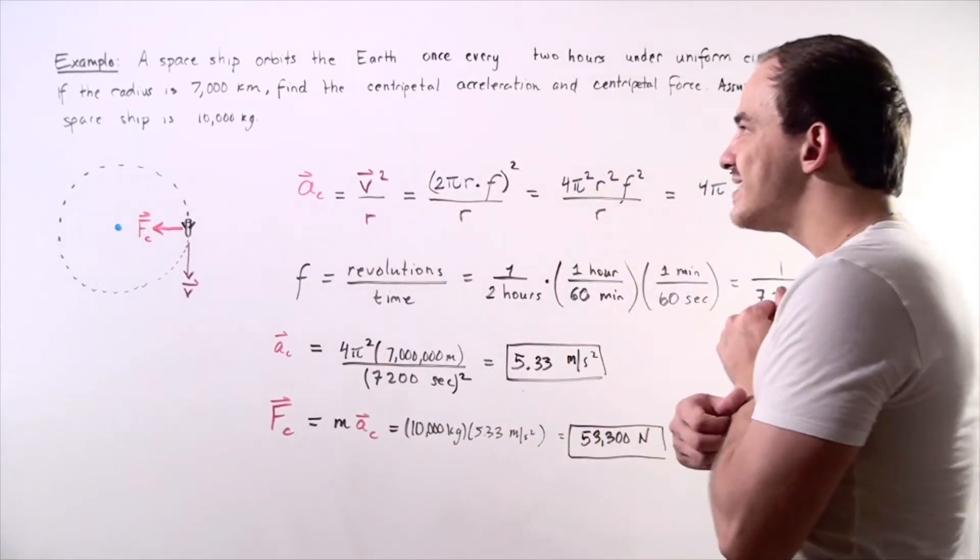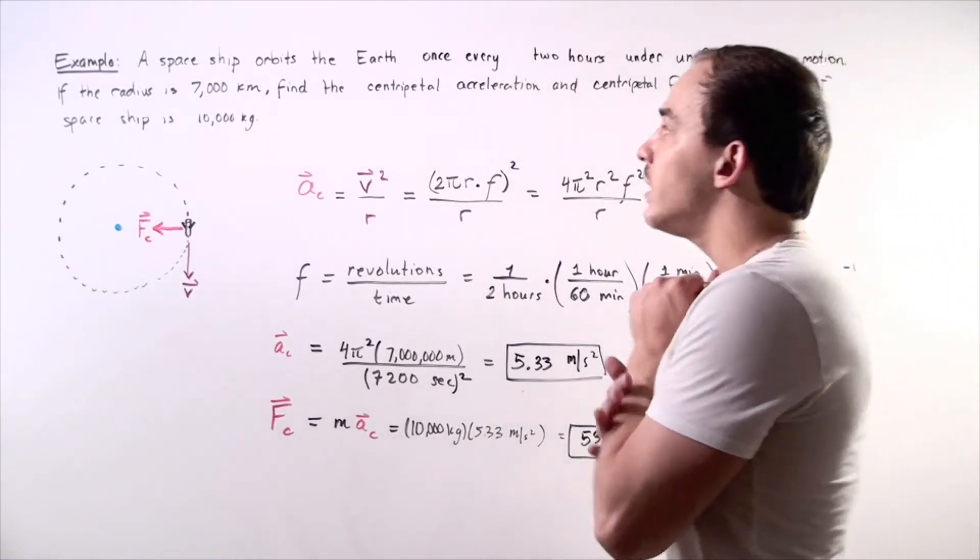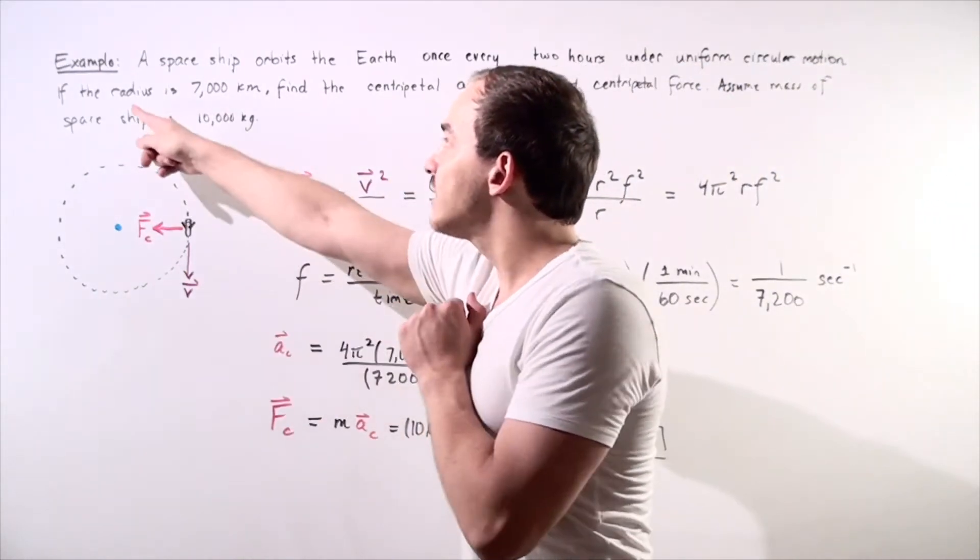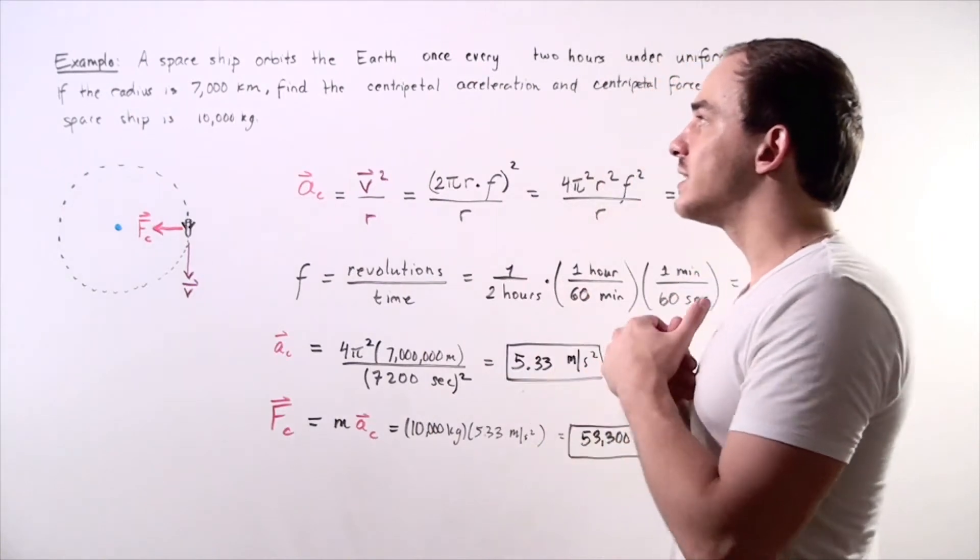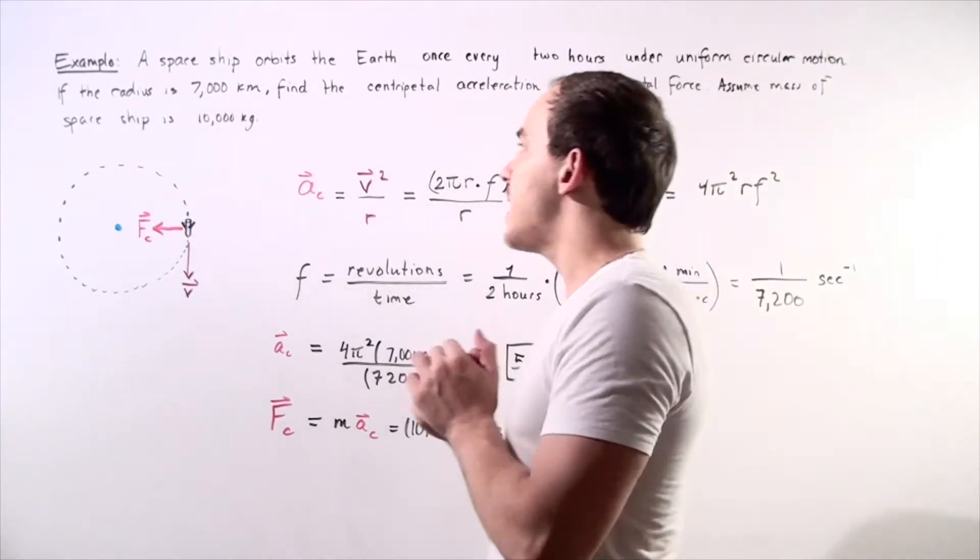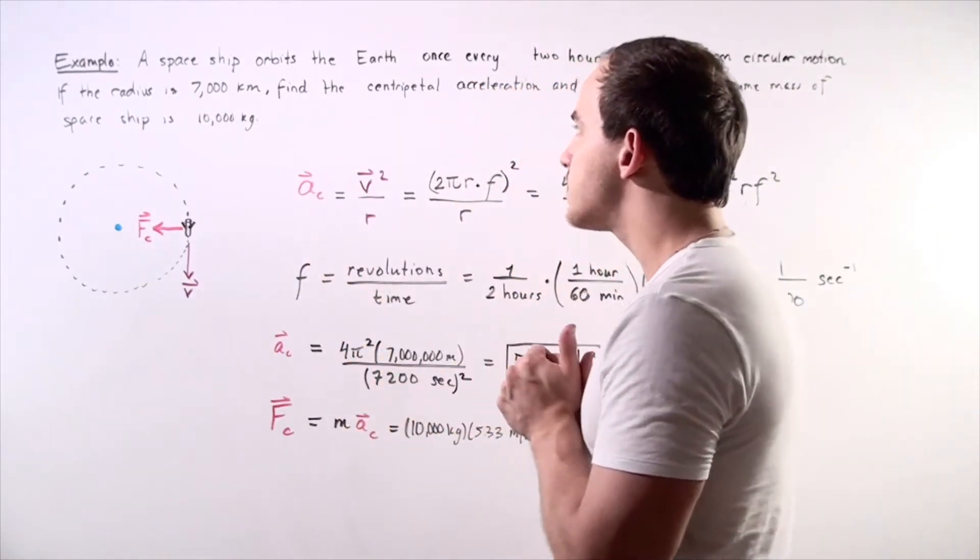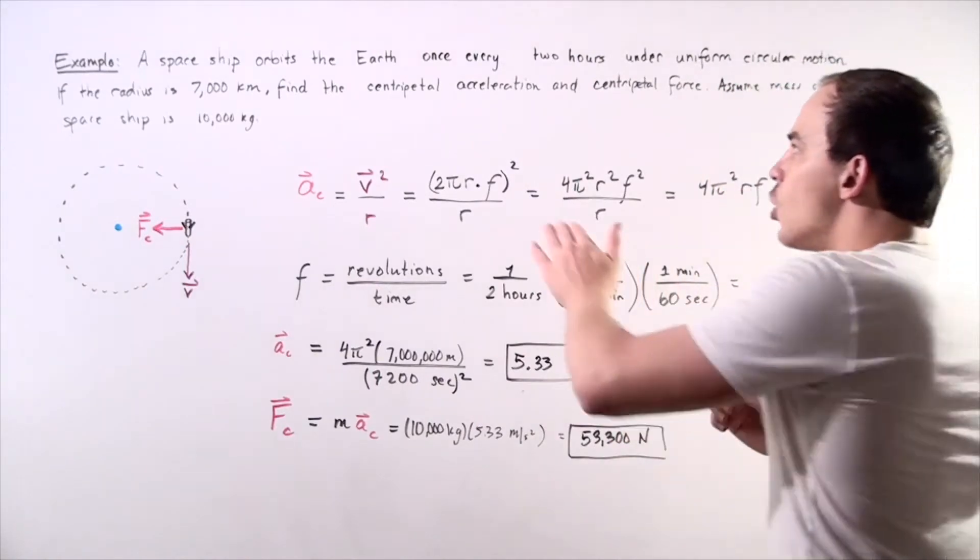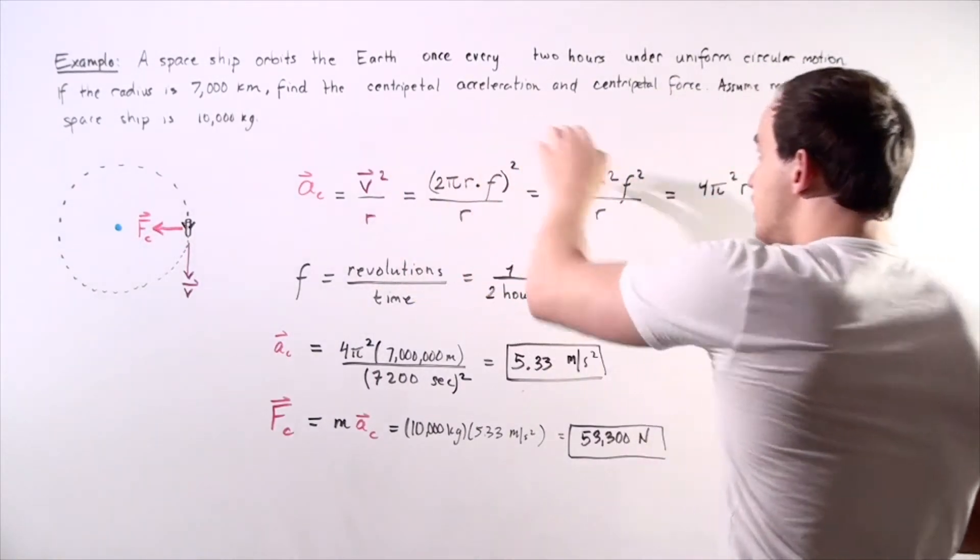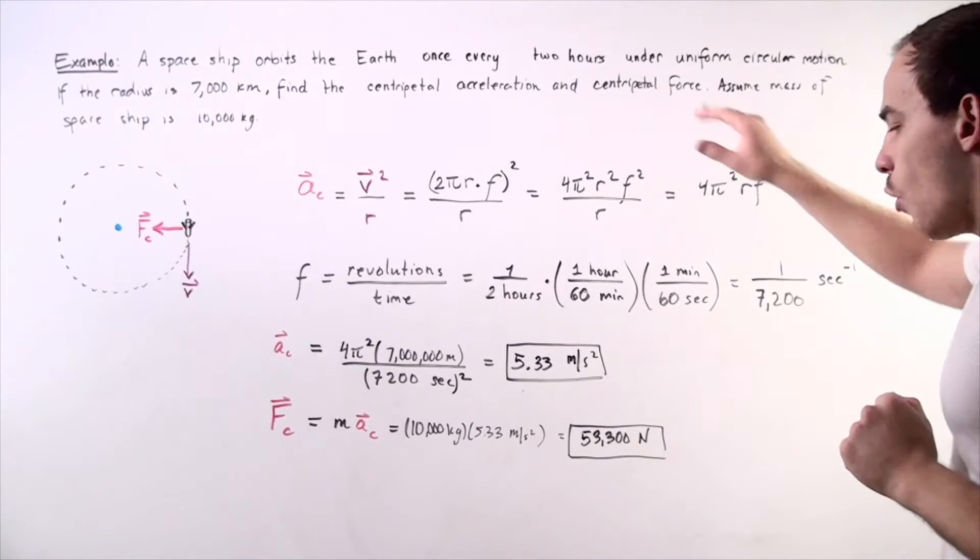So what exactly are we asked to find in this problem? Well, given the fact that the radius is 7,000 kilometers and the mass of the spaceship is 10,000 kilograms, we want to find what the centripetal acceleration is, as well as the centripetal force.